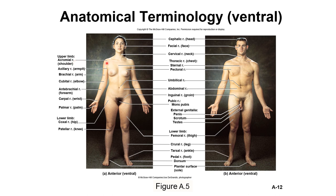Additional regions include the acromial region at the shoulder, axillary region at the armpit, brachial region for the arm, cubital region for the elbow, antibrachial region for the forearm, carpal region for the wrist, palmar region for the palm, coxal region for the hip, and patellar region for the knee.